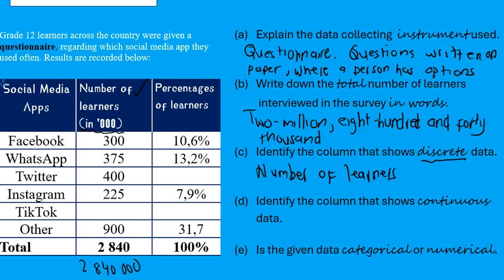Question D: Identify the column that shows continuous data. The last column — the percentages of learners — has values with a decimal. Therefore they are continuous. The easiest way to remember this is: once a number has a decimal and continues after it, it becomes continuous because the number continues after the decimal. So the last column, percentages of learners, is the continuous data column.